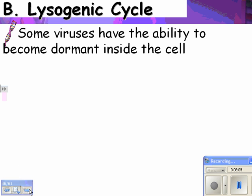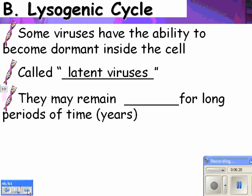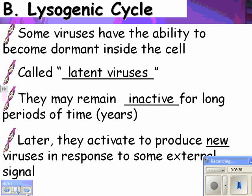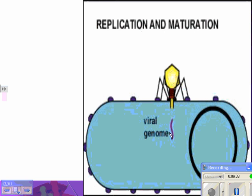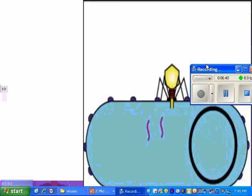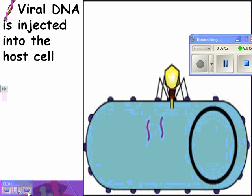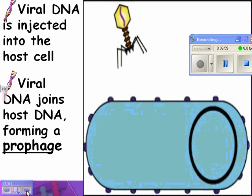The lysogenic cycle is a quieter one, at least for a while. Some viruses have the ability to become dormant inside the cell — those are called latent viruses. Not all viruses do that, but the ones that do can go into the cell and just lie quiet for a while. They remain inactive, or dormant, for long periods of time. Later, they activate to produce new viruses in response to some signal. Instead of replicating right away, the DNA actually inserts itself inside the host chromosome.